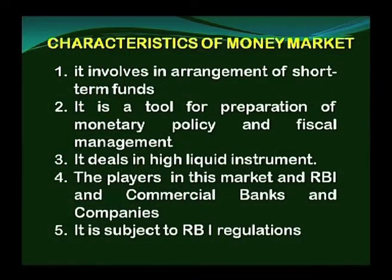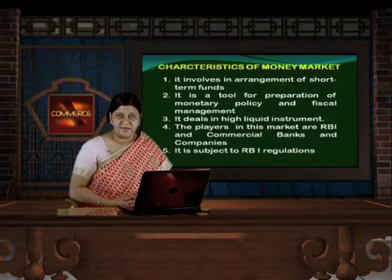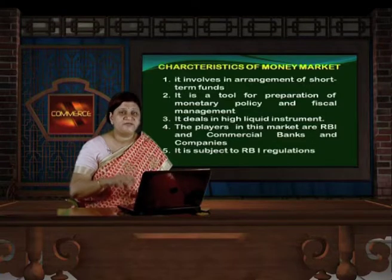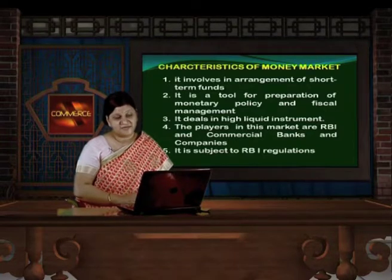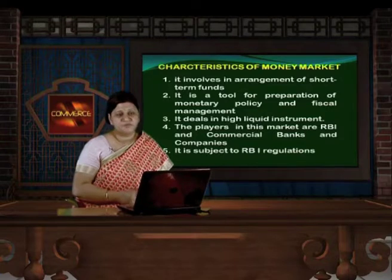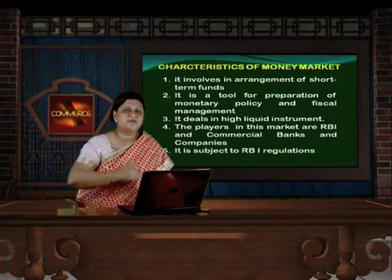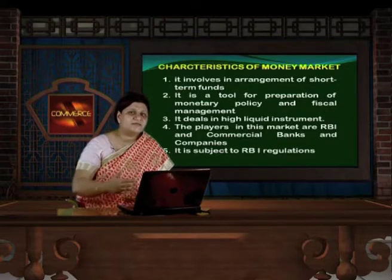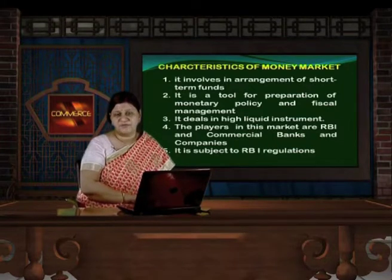The players in this market are RBI, commercial banks, and companies. Under money market, RBI is the major dominating factor as it also deals with preparation of monetary policies and fiscal management. Commercial banks and companies are also part of the money market because the prime objective is maintenance of liquidity. Even RBI and central banks need to maintain liquidity in the form of SLR and CRR ratios, so money market plays a major role in maintaining liquidity and safety of funds.